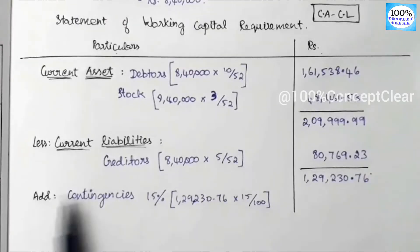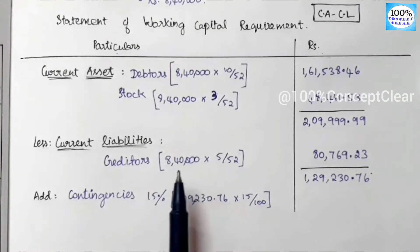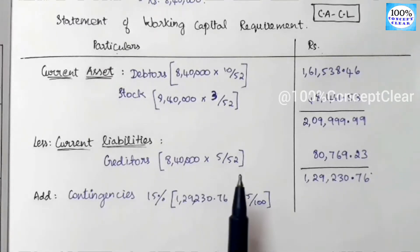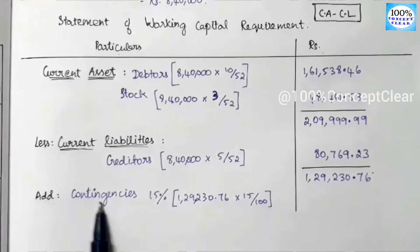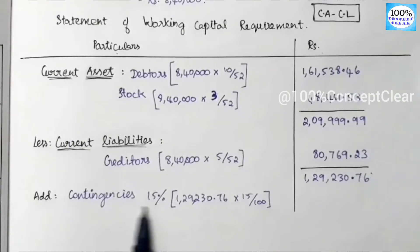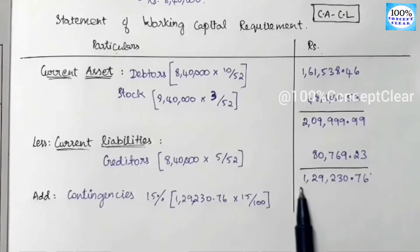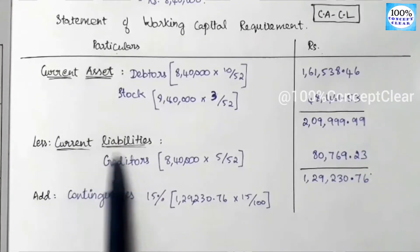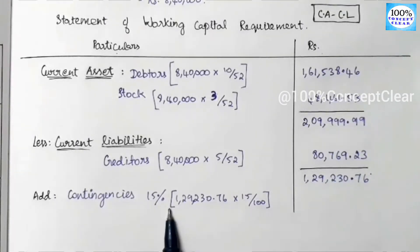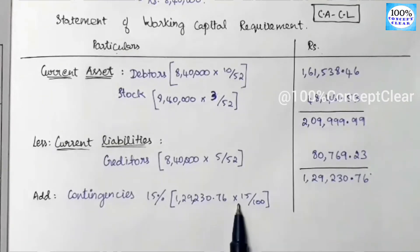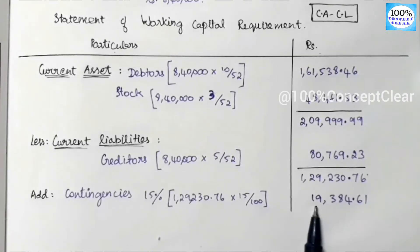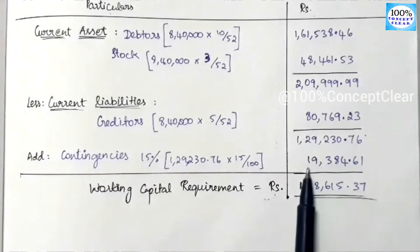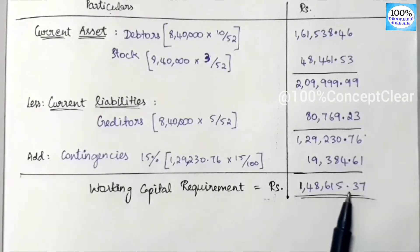Contingencies are 15%, which we have to add. Contingencies represent cash set aside for any future emergency. We add this to working capital. The contingencies are calculated as 15% of the net working capital value Rs. 1,29,230.76, which equals Rs. 19,384.61. Adding these two values together gives us Rs. 1,48,615.37.